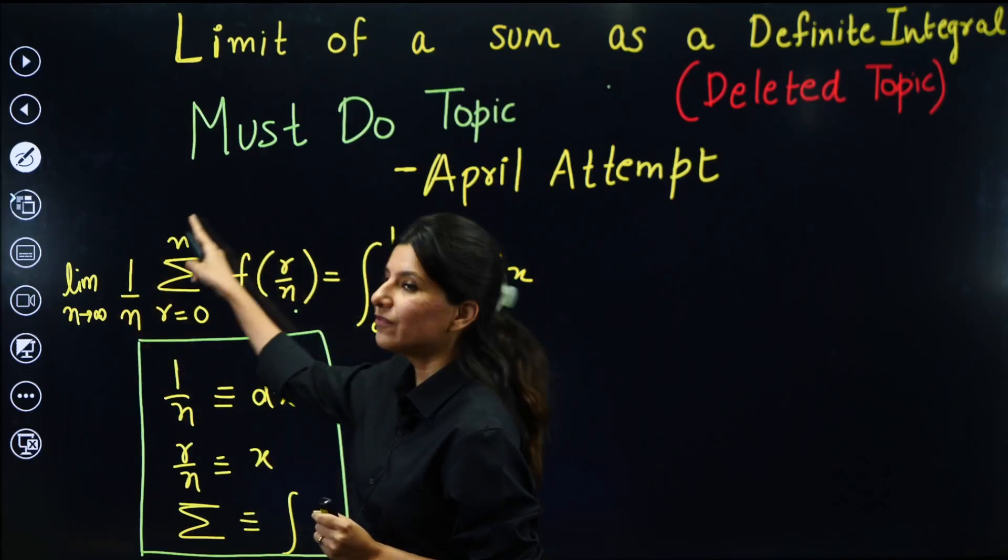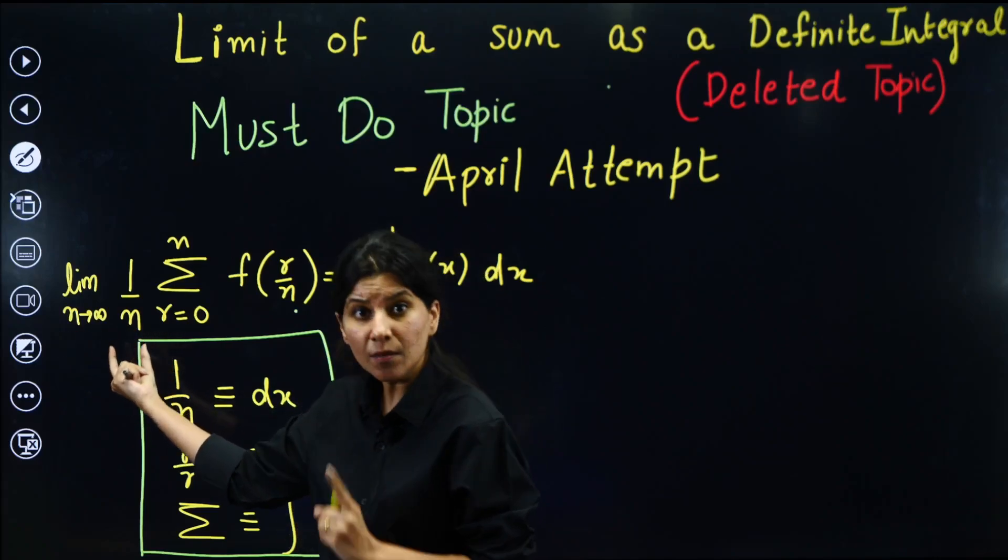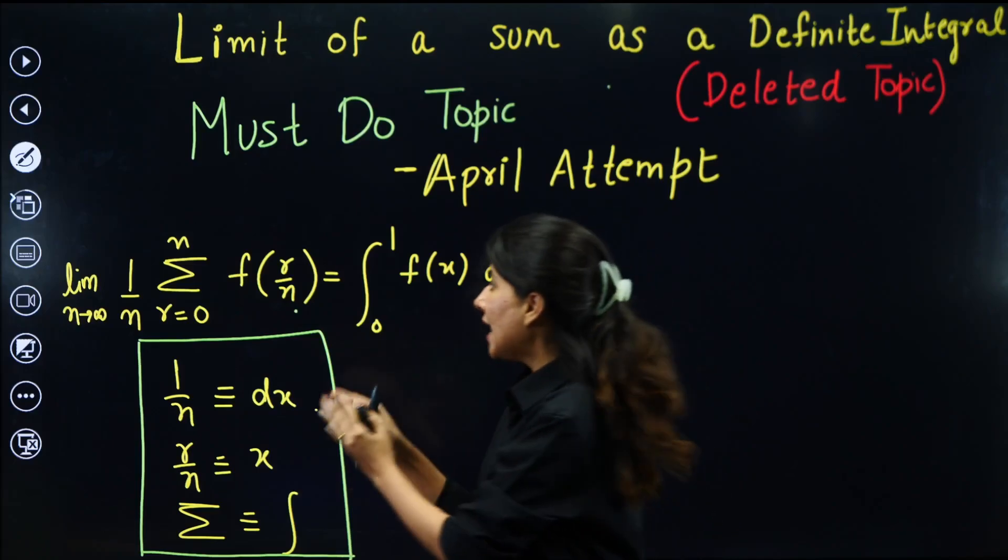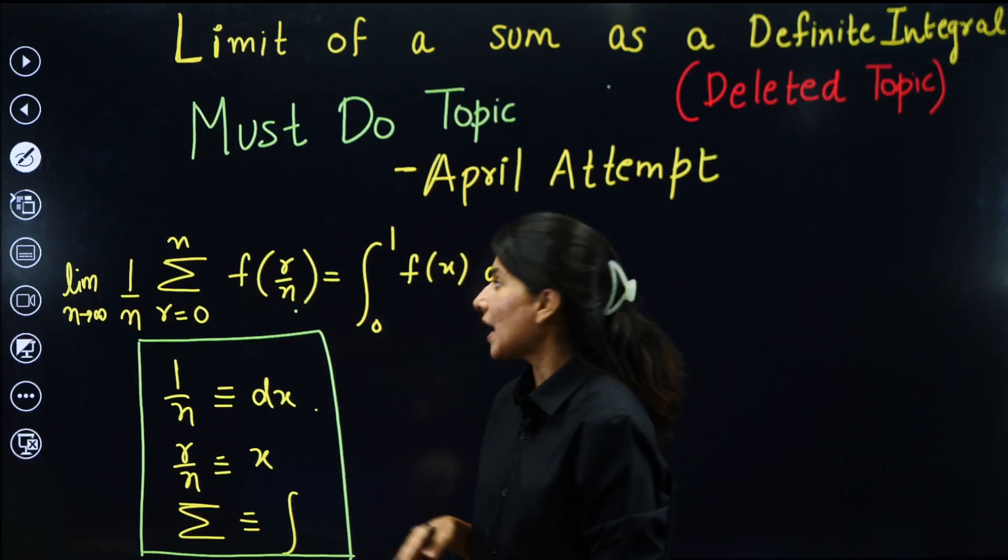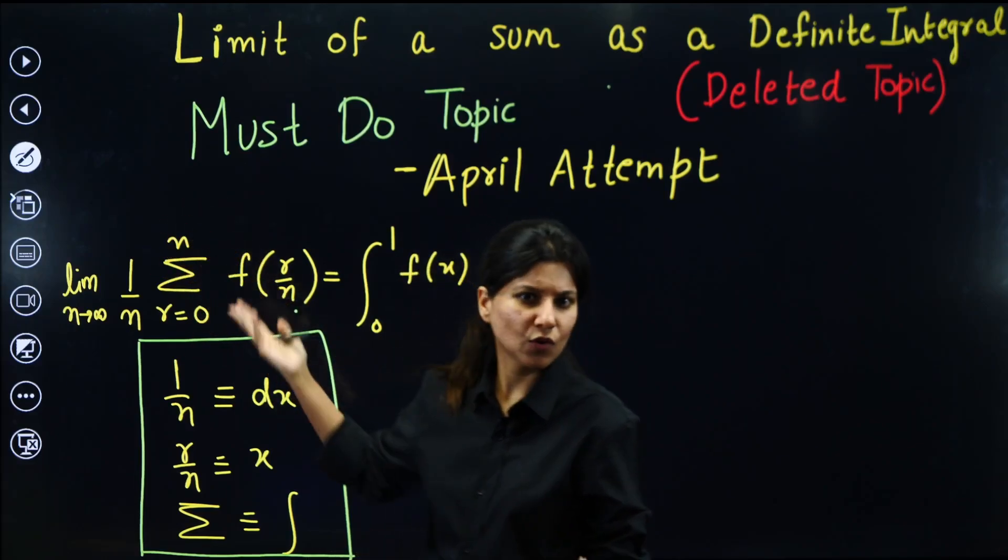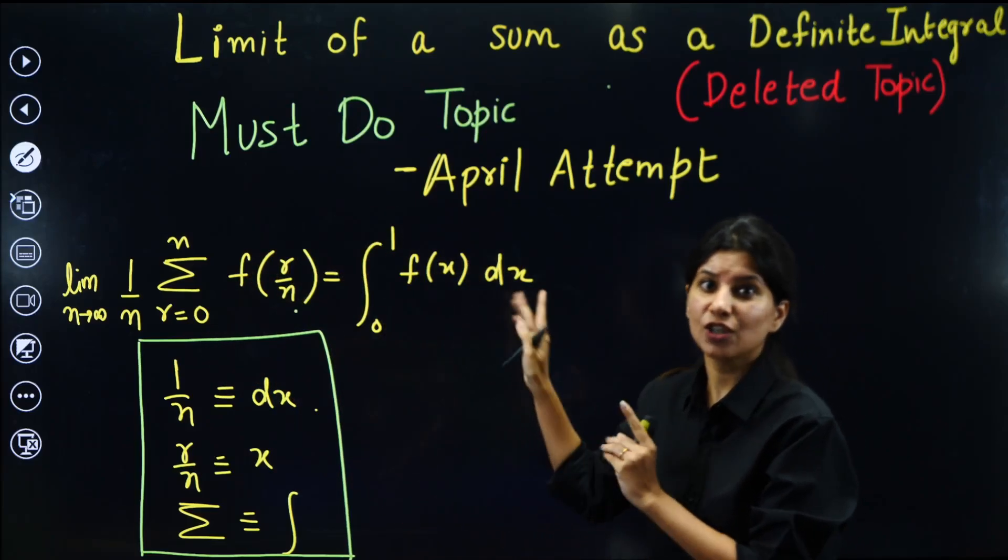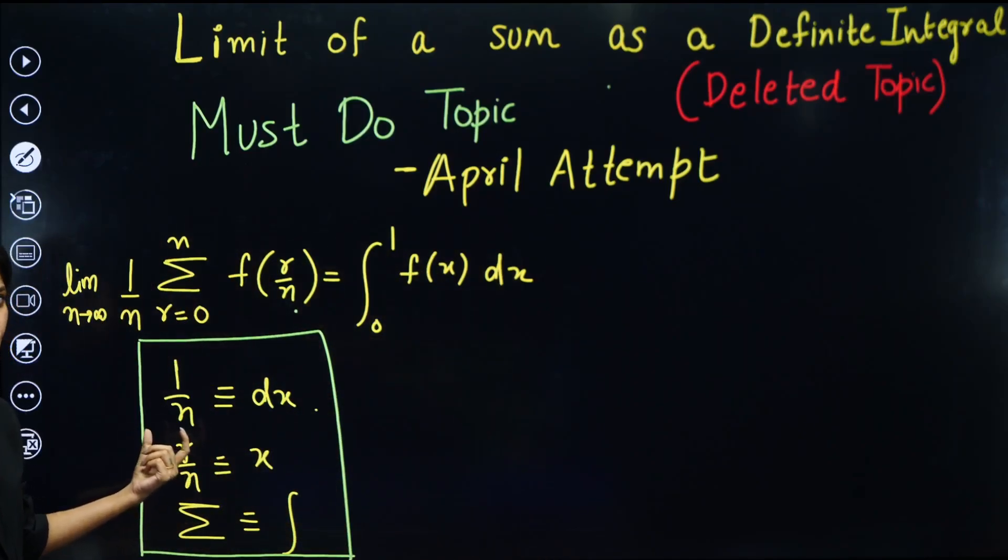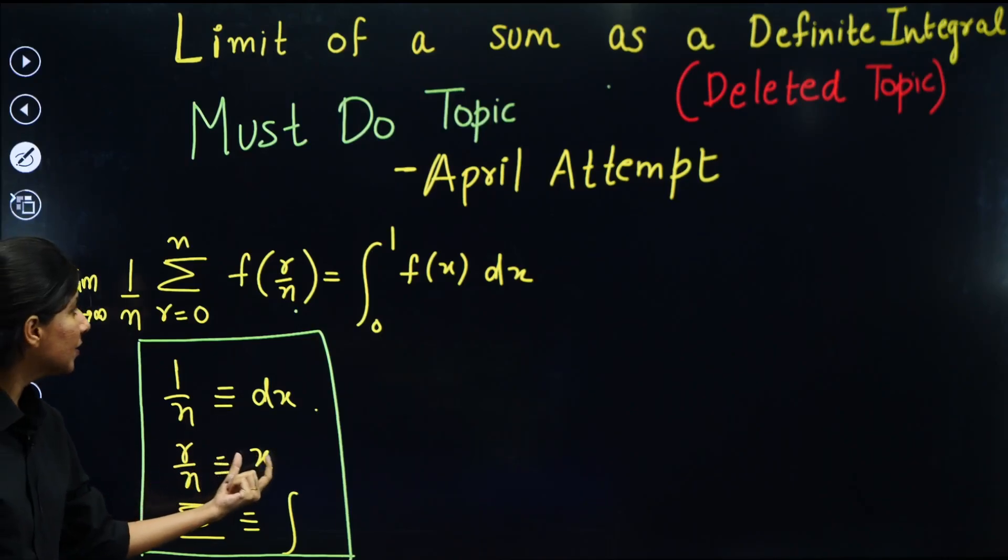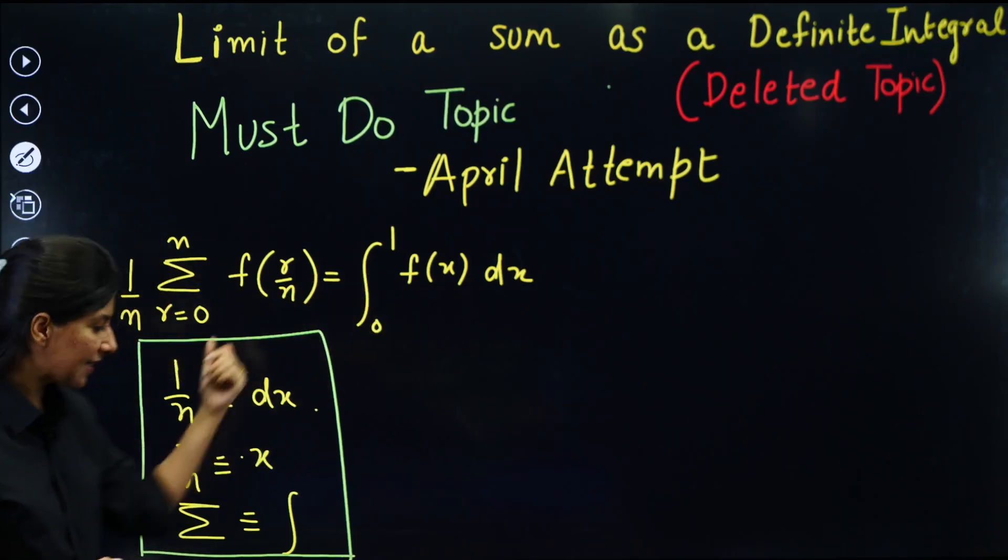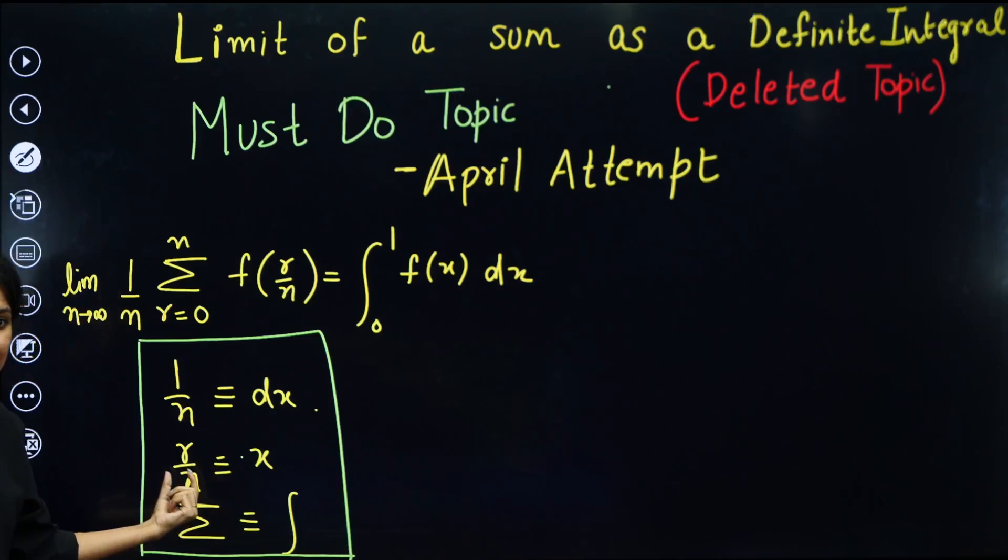This is the format which we need to create in the question. That is limit N tend to infinity should be there. 1 by N should be there. If it is not there, you have to create it. And inside the sigma, the complete expression should be only about R by N. Where R equals 0 to some N, 2N, 3N, whatever. If it is the case, you can directly convert it into definite integration. How? Let me show you. So first of all, you can see the conversion directly. 1 by N will be replaced by dx. R by N clearly will be replaced by x. F of R by N will be F of x. And sigma will be replaced by integration.